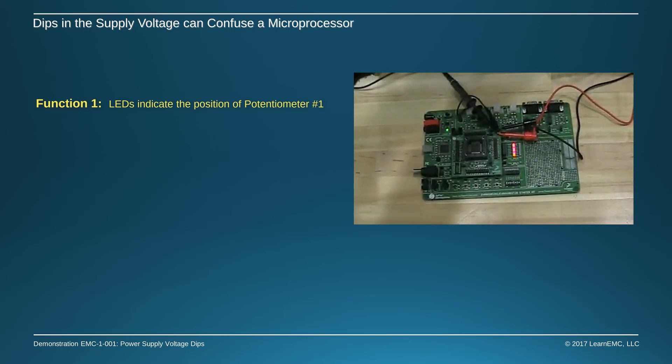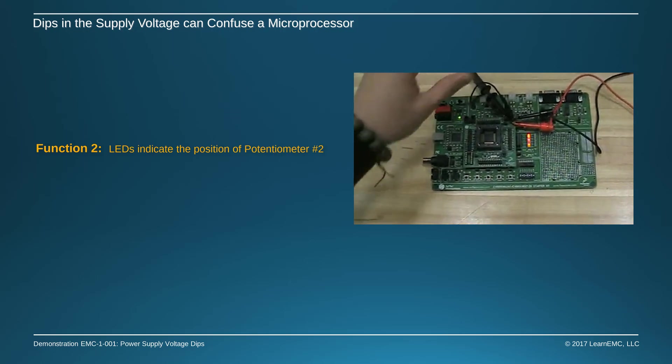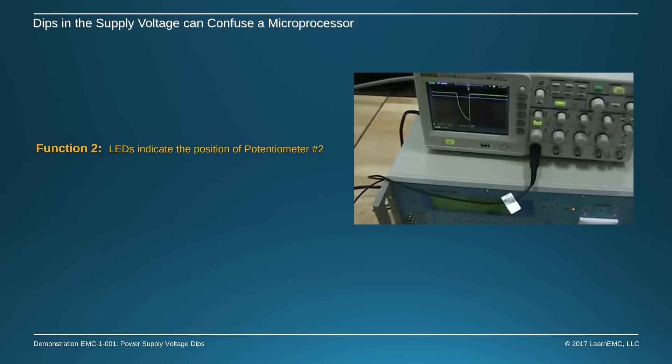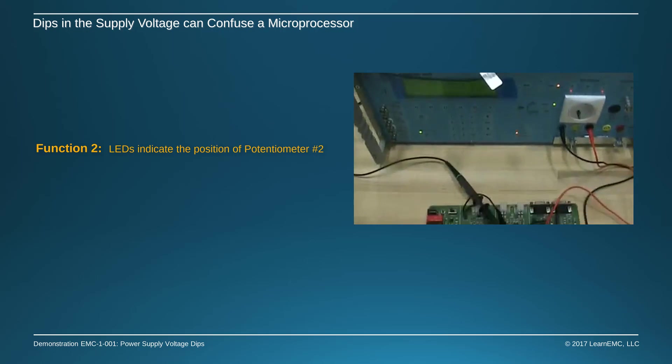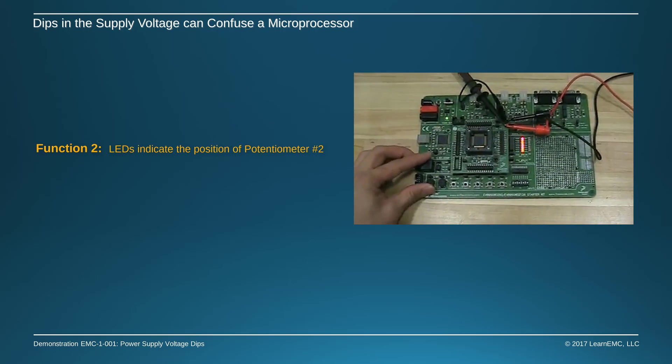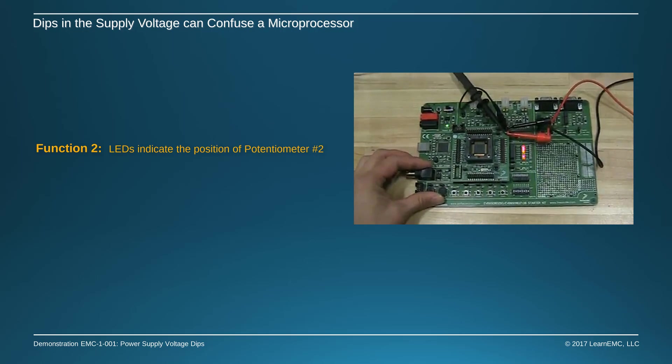Now we'll dip the power for 38 milliseconds as recorded on our oscilloscope. We see that the processor which had been performing function 1 is suddenly performing function 2.